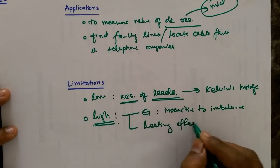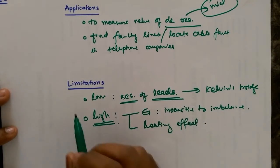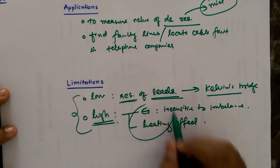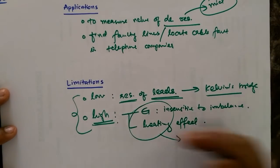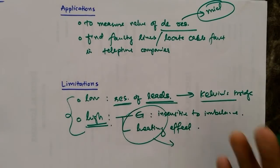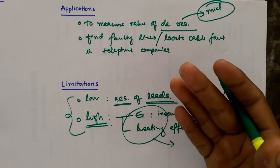And another limitation is heating effect. If your resistance is too high, then the heating will affect the result. So these are the couple of limitations because of high resistance.